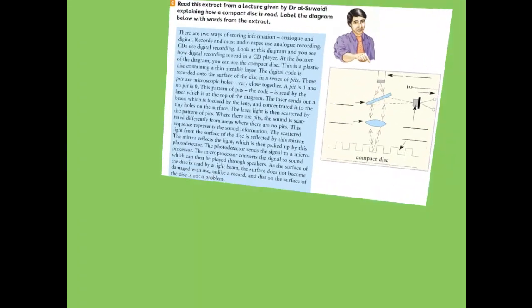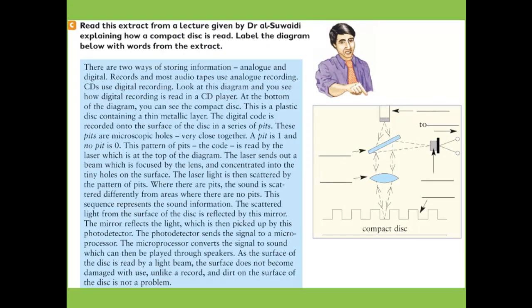Let's move to number C. Read this extract from a lecture given by Dr. Elseyd explaining how a compact disc is read, and label the diagram below with words from the extract. There are two ways of storing information: analog and digital. Records and most audio tapes use analog recording; CDs use digital recording. Look at this diagram to see how digital recording is read in a CD player.